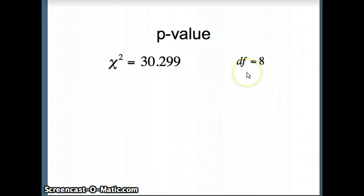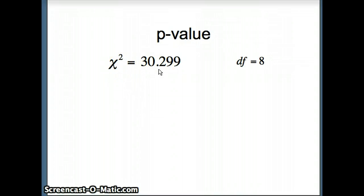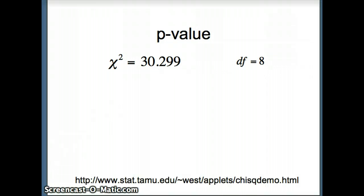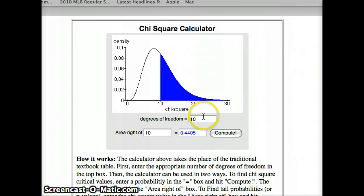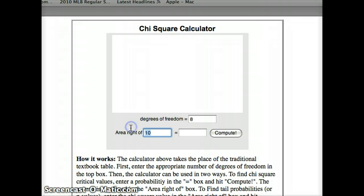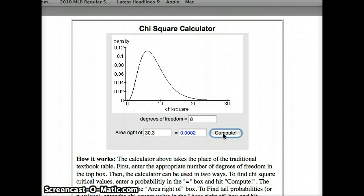Knowing chi-square equals 30.299 and degrees of freedom equals 8, we find our p-value. Remember, if chi-square is zero, we have exactly what we'd expect if the data sets were independent. The greater chi-square is, the more evidence against independence. This is a one-tailed test — we find the area to the right of the test statistic. Using the applet with 8 degrees of freedom and a value of 30.299, the area to the right is 0.0002, which is a very small p-value.